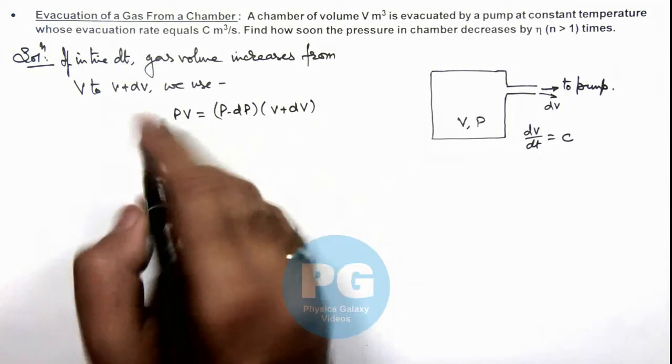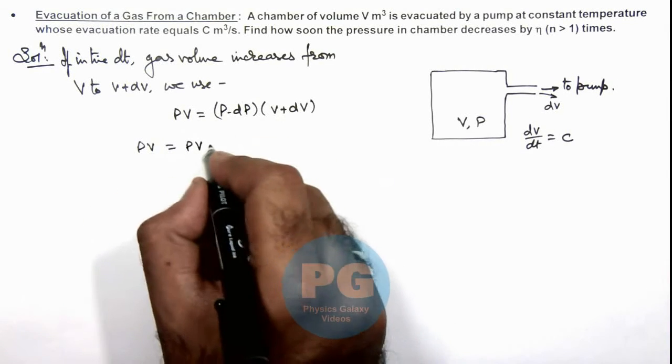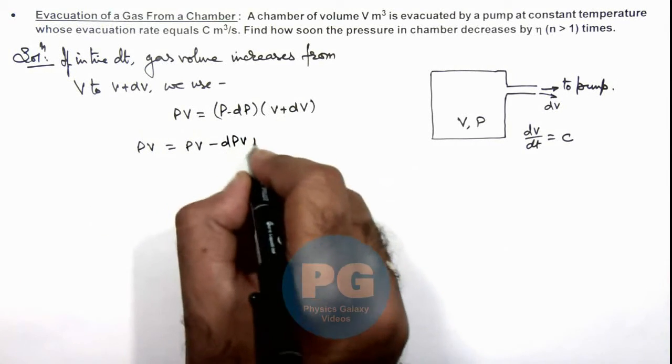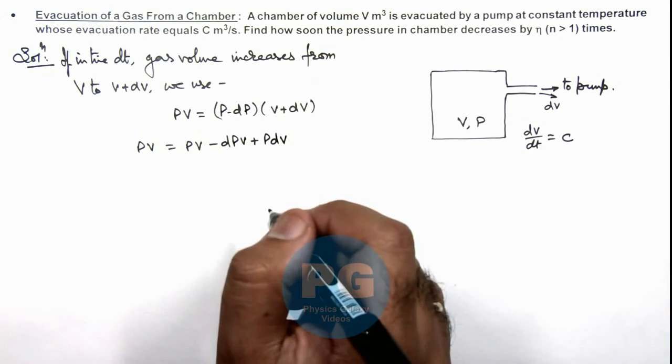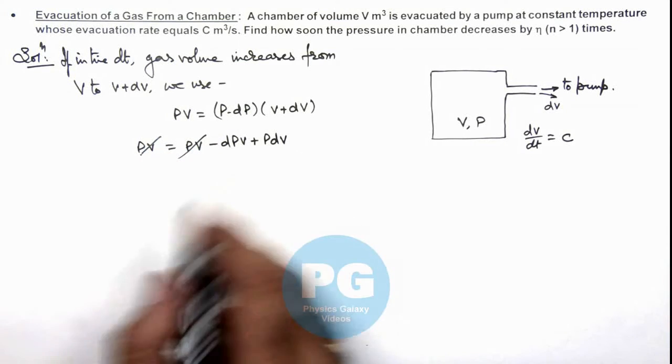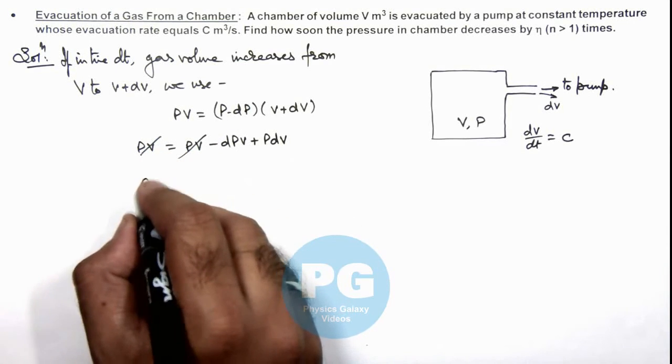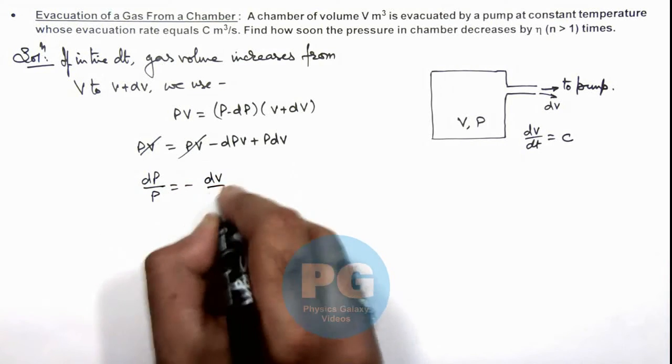Now in this situation we further open it: PV = PV - dPV + PdV. We can neglect the product of elemental quantities. Here PV also gets cancelled out, and rearranging terms this gives us dP/P = -dV/V.